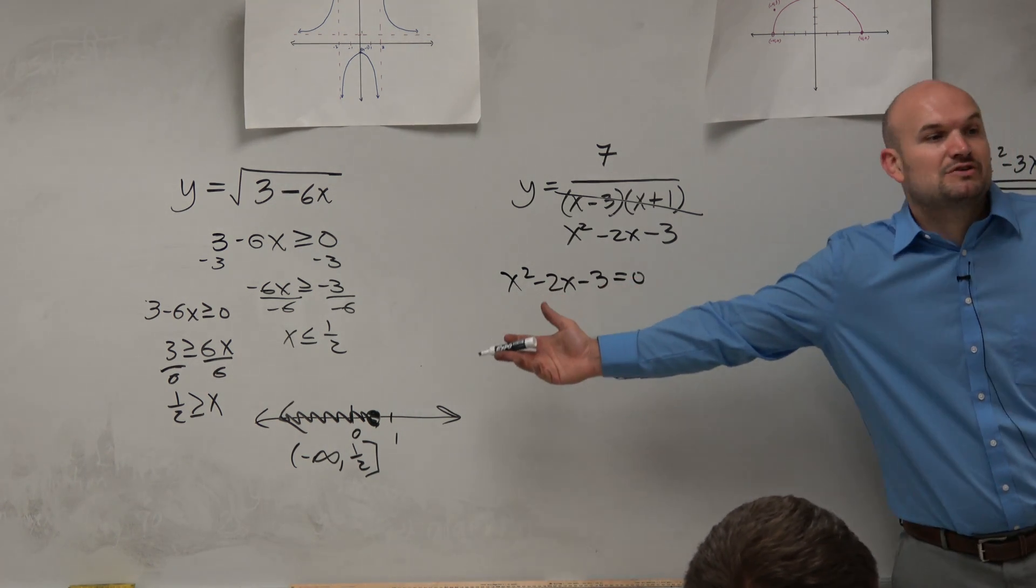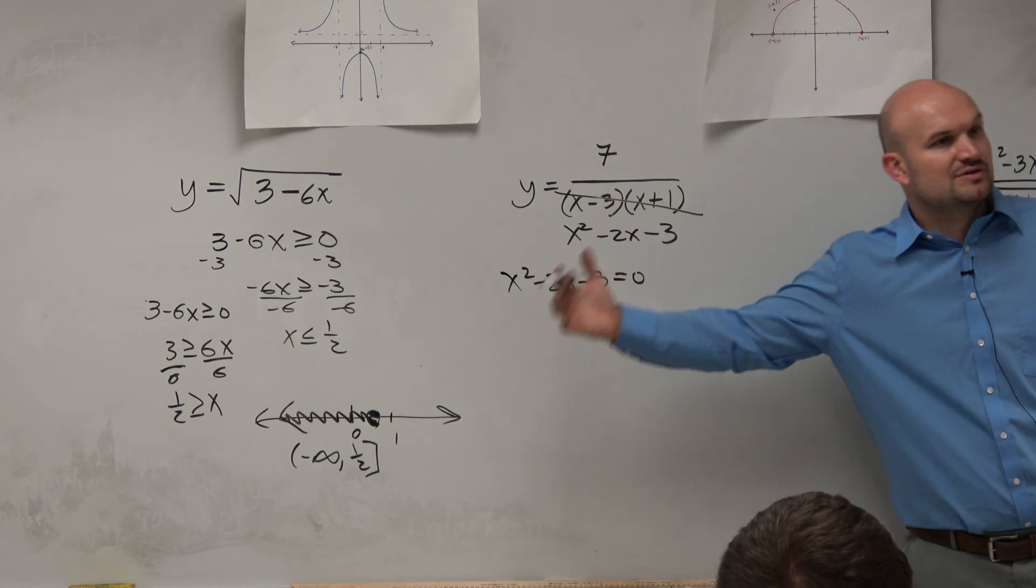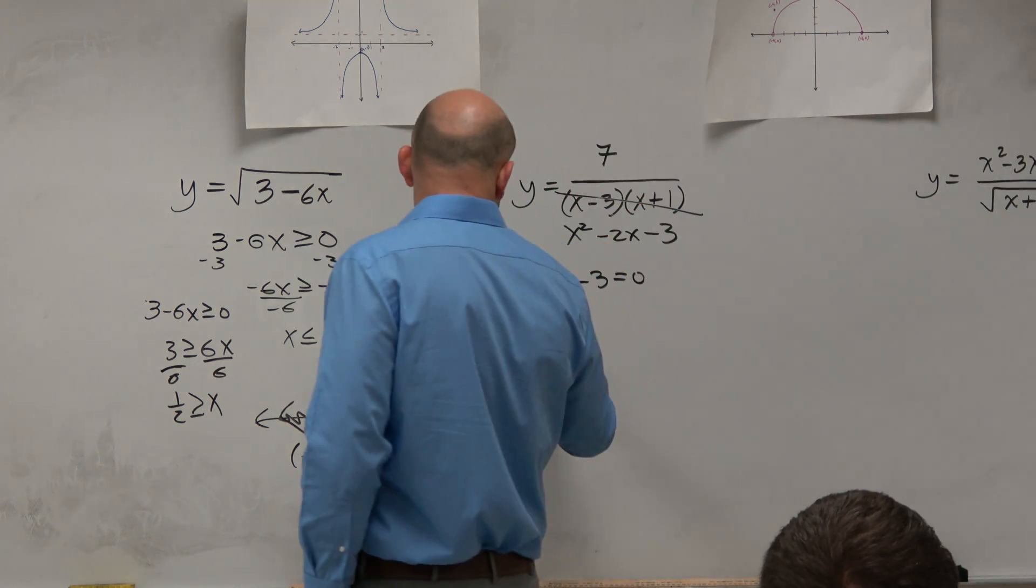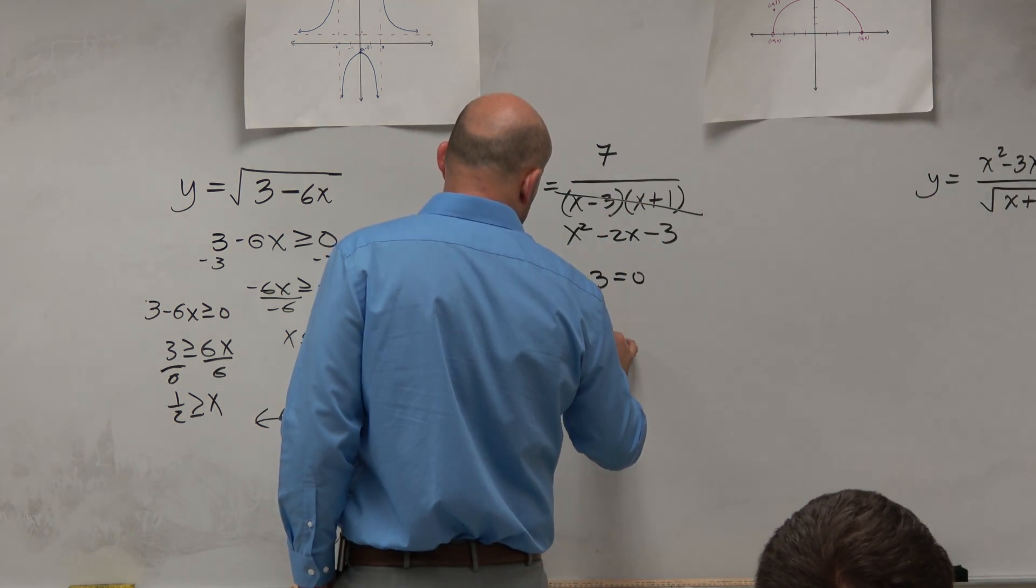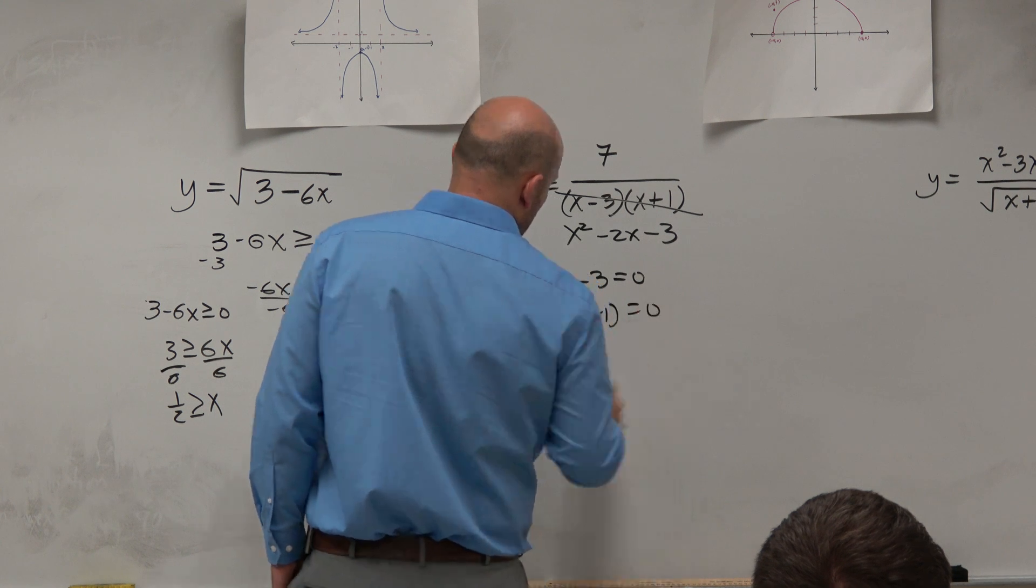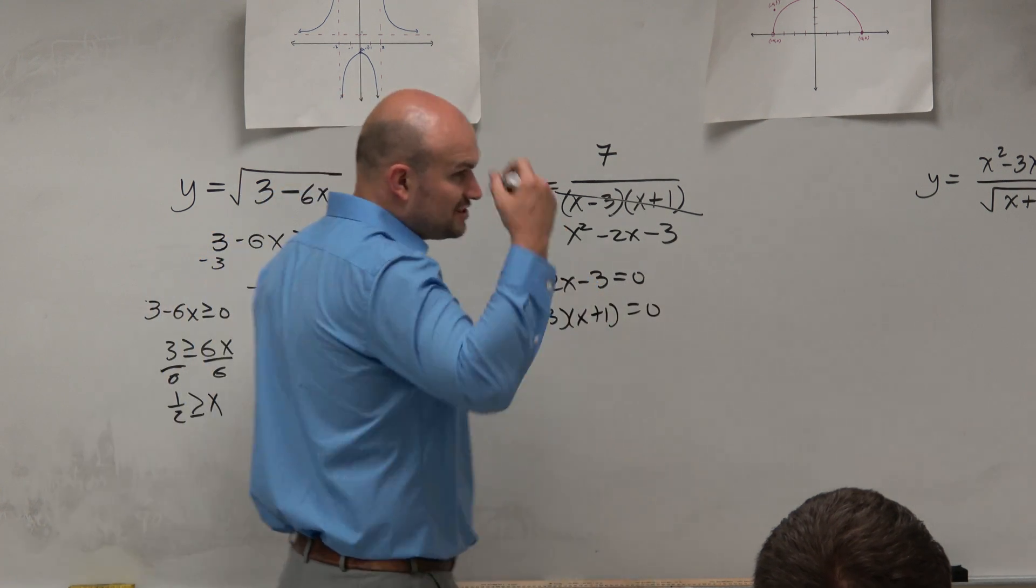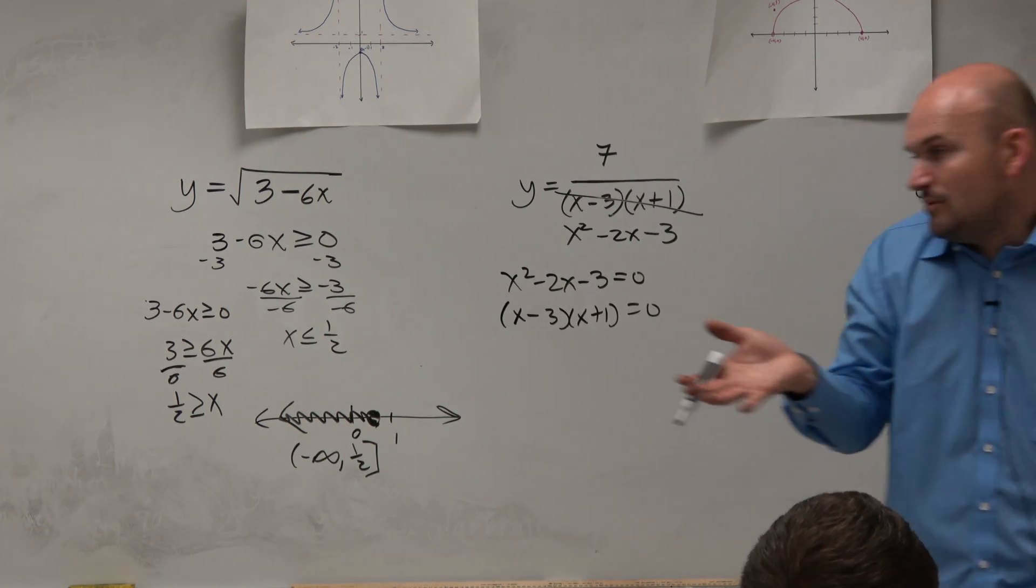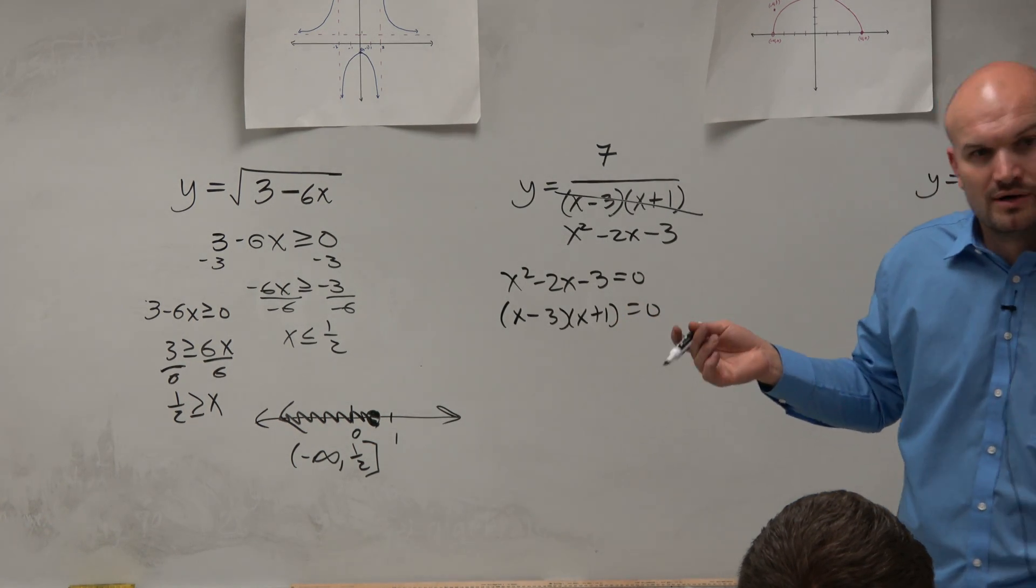Because sometimes you might have to use the quadratic formula, or you might have to use some other factoring technique. Fortunately, we already have the factored form here, so we don't need to do anything with this. And then here, you could either just use, like in this point, we can use our understanding of, oh, it's positive 3 and negative 1, right?